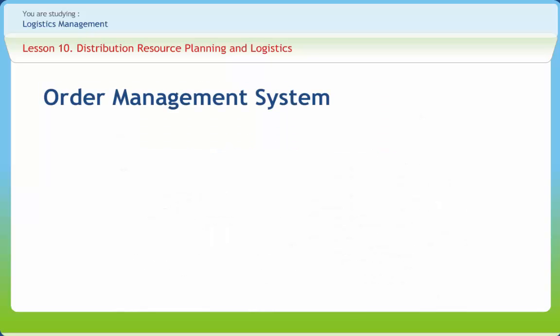The order management system shows how buyers and sellers communicate information relating to individual orders of product. Effective order management reflects the quality of the firm's overall management information system and vice versa. Thus, the object of the order management system is that desired customer service capability in terms of availability and operational performance should be such that the firm achieves target service goals every time. This would result in zero defect performance, which is known as a perfect order.